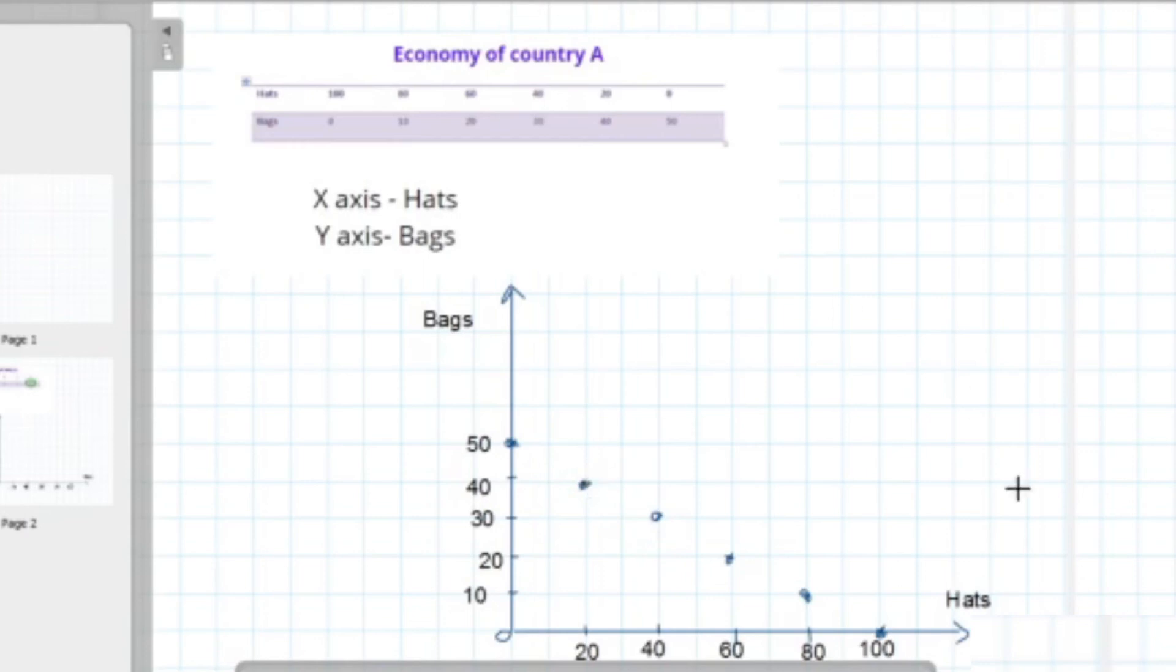If you look at our coordinates, we are getting a linear PPF or a straight line PPF. So this is how my PPF would look like.